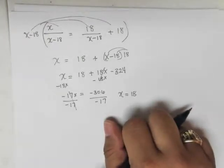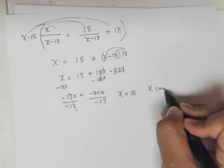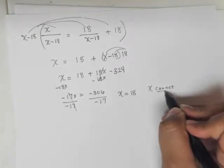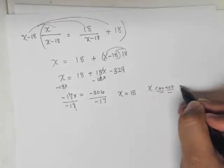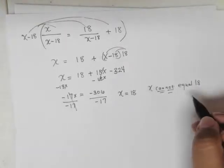What did we say earlier? Here, x cannot equal 18. We said x could not equal 18.